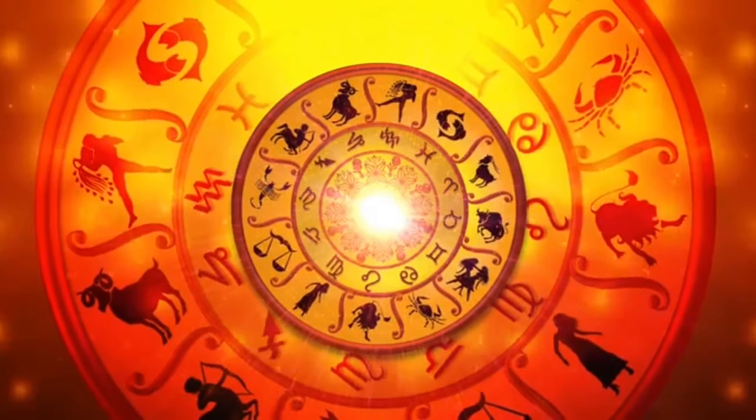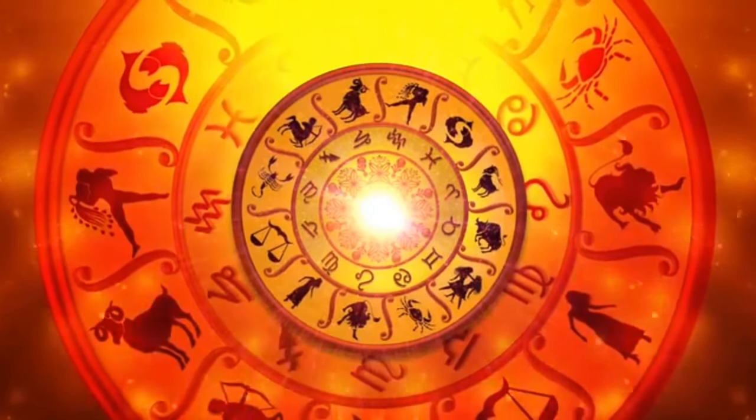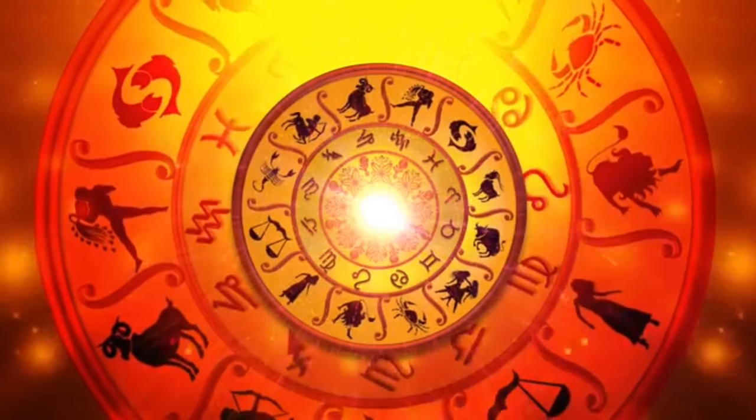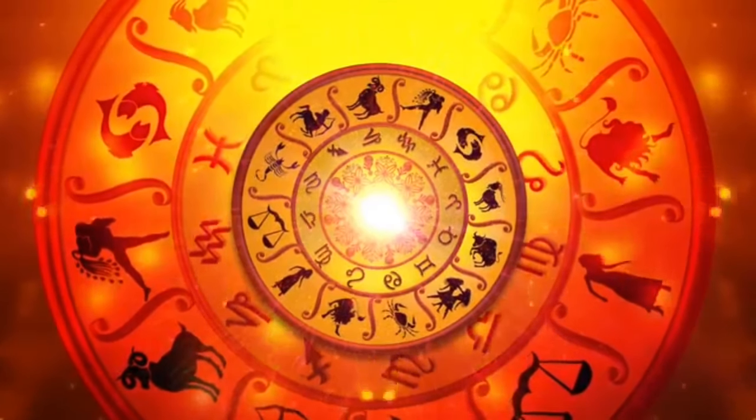A person's birth year, month, date, and time represent each of the four pillars. Each pillar is made up of two characters. One character for a heavenly stem and another for an earthly branch.